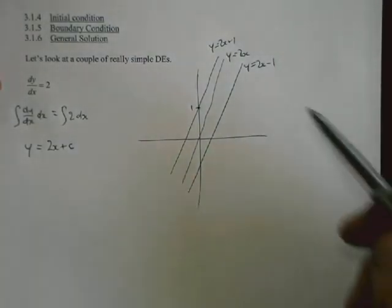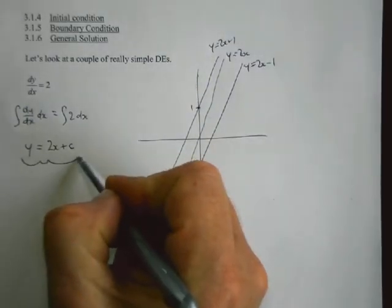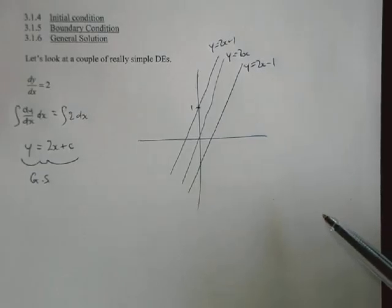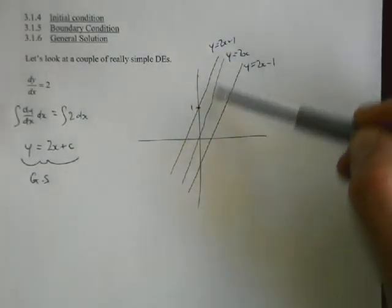So what we've got going on here is what's called a general solution. This thing here is a general solution, which we refer to as usually shortened to GS.